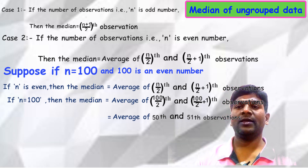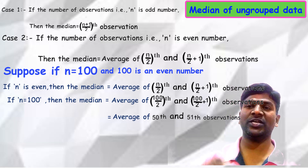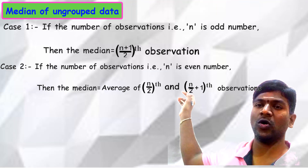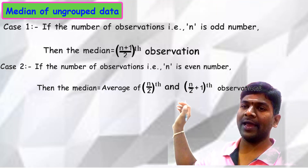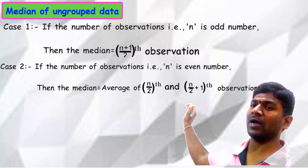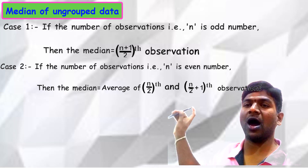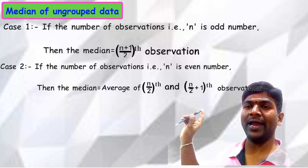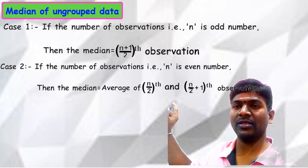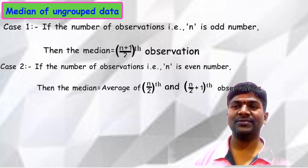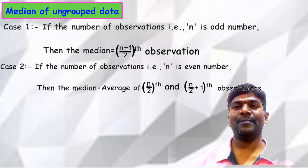To summarize: if the number of observations n is an even number, the n/2-th and (n/2 + 1)-th terms are the middle values. If n is an odd number, the (n+1)/2-th observation is the middle value — because identifying the middle value is the key step in calculating the median of raw data.